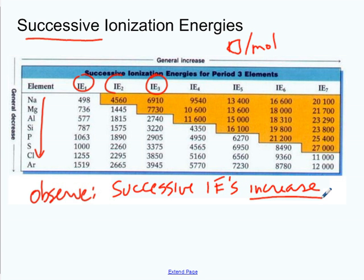That's one observation. What does that mean practically speaking? It means it's getting harder to take away electrons. You pay a certain price to take away the first electron; when you go to take away a second, it's going to require more energy. Why would it take more energy to take away a second electron than the first, a third than the second? What's the simple explanation?